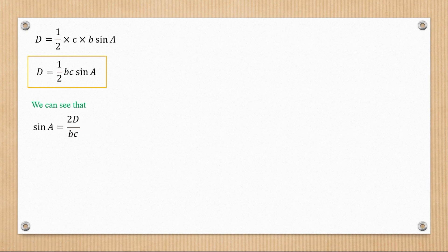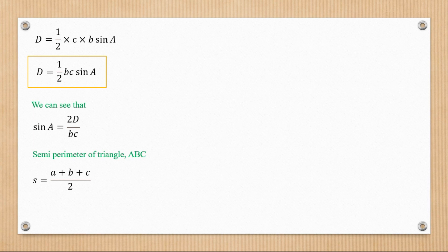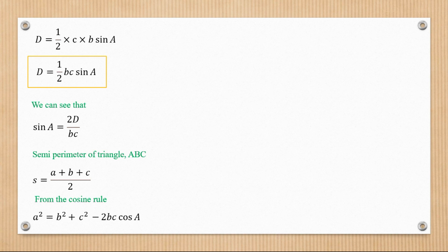Now we're going to derive Heron's formula. For a triangle ABC, the perimeter is the total of the sides — small a, small b, and small c — so the perimeter P equals a plus b plus c. We are more interested in the semi-perimeter, which is half the perimeter: s equals (a + b + c) / 2. From the cosine rule, we focus on the form a² = b² + c² − 2bc·cos(A), so we can compare cos(A) with sin(A) in our calculations.